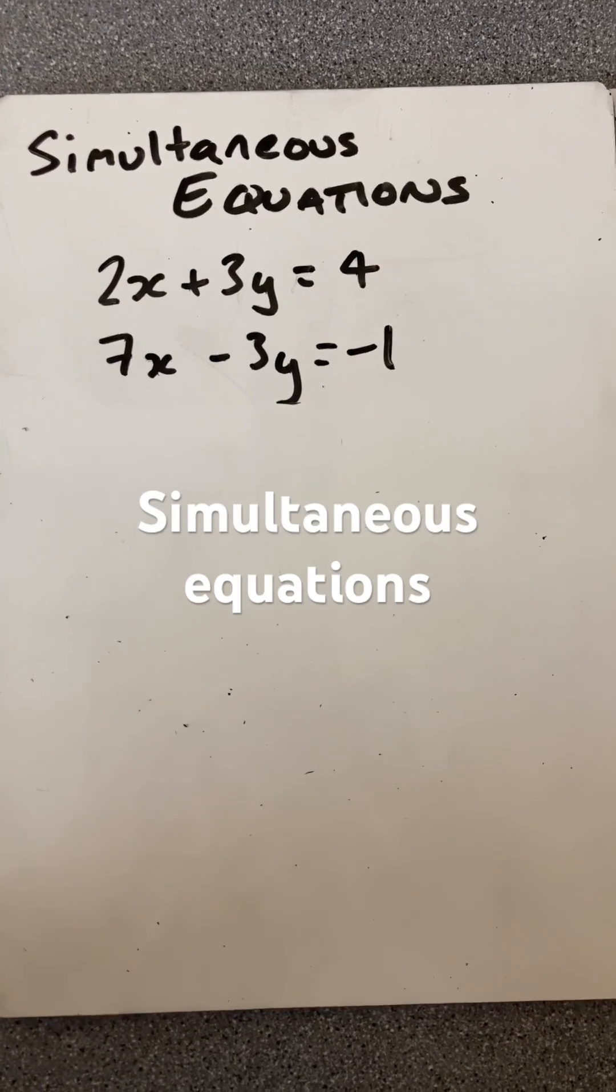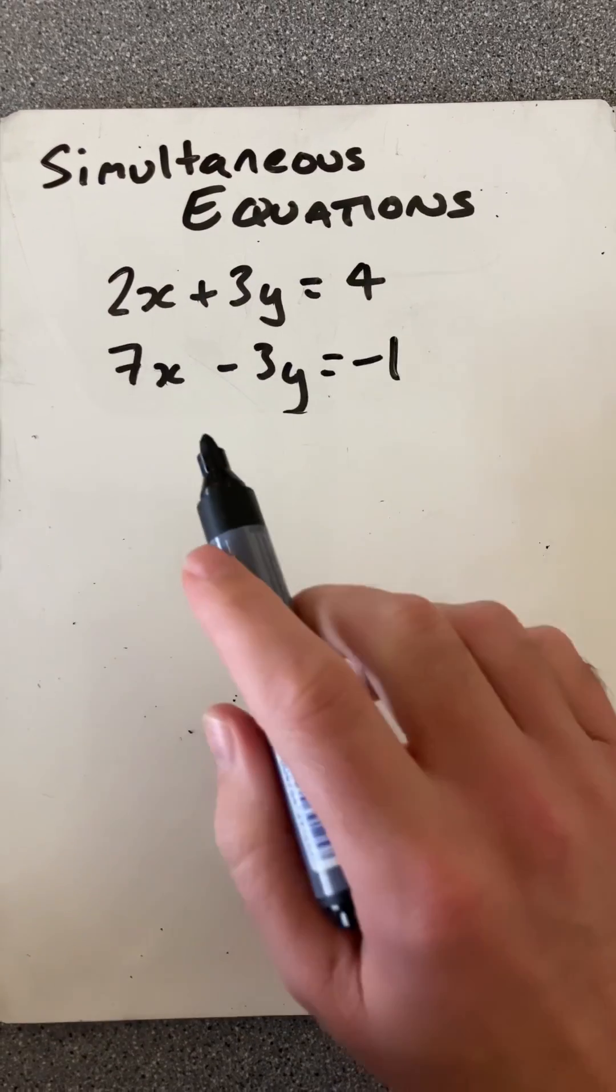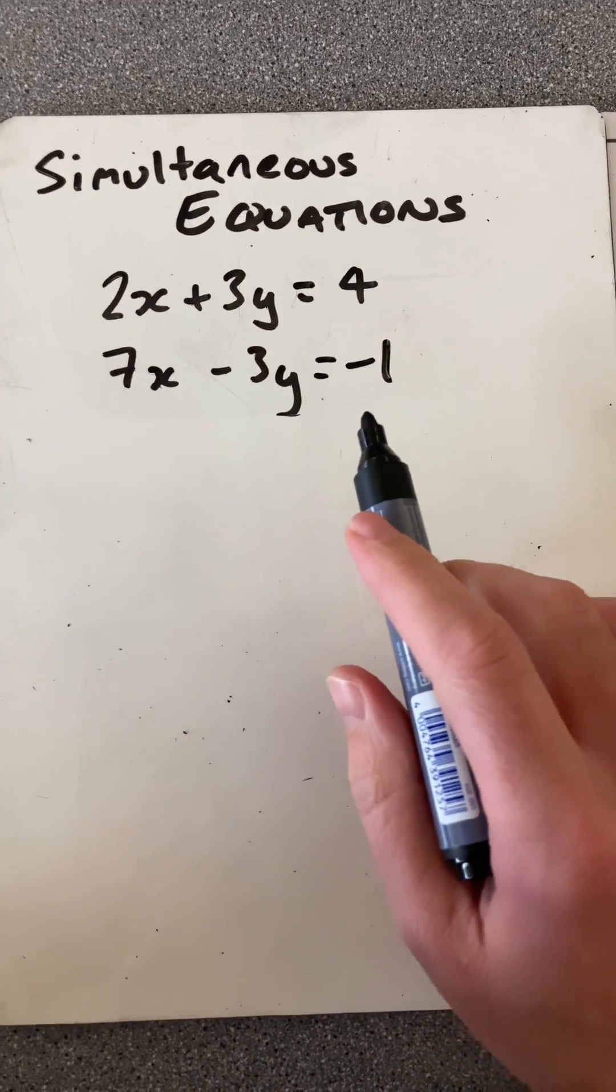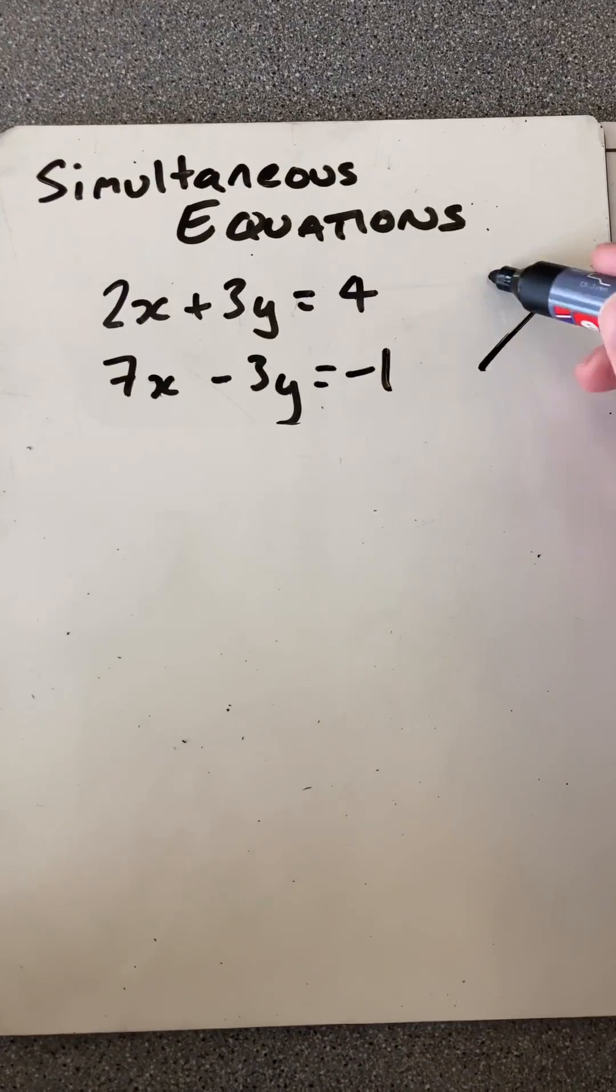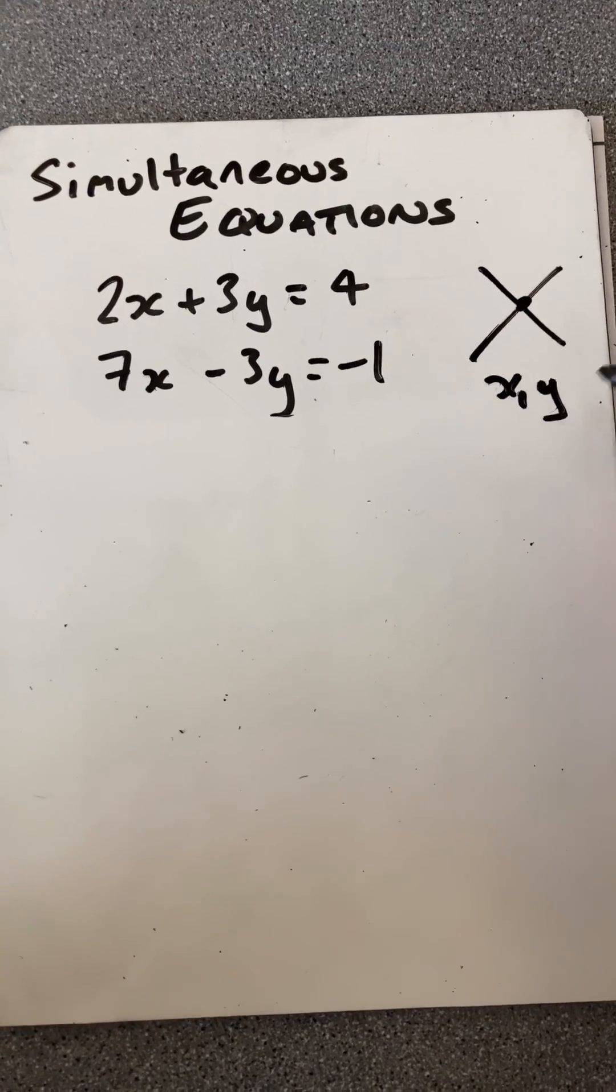Hello and welcome to Martin Maths doing a short on simultaneous equations. We have the line 2x plus 3y equal to 4 and 7x minus 3y equal to minus 1. So what we're looking for is where they would meet and that solution will have coordinates x and y.